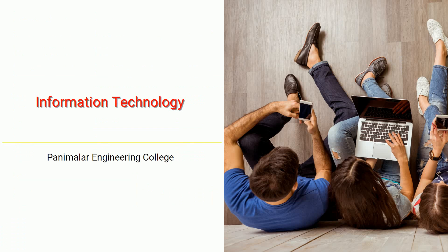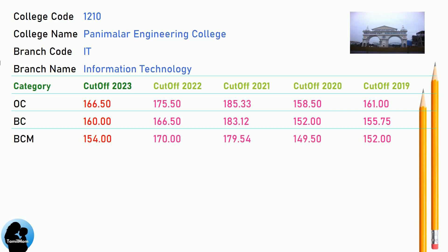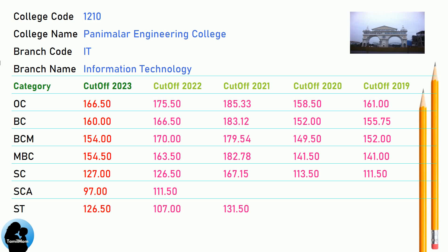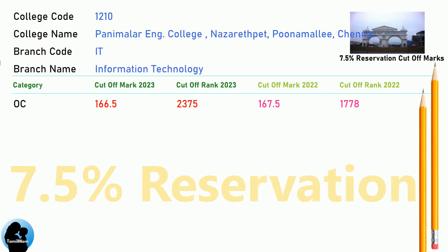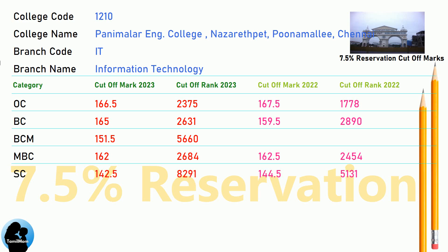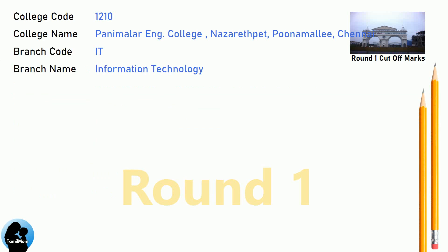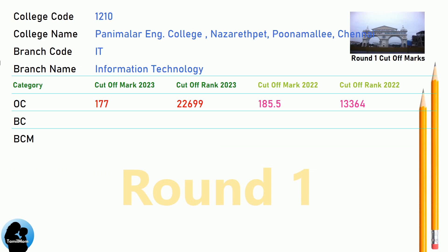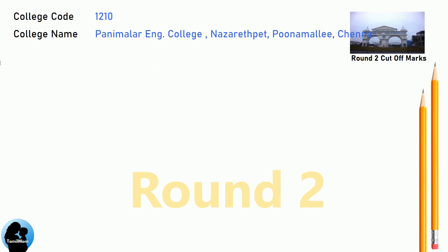DNEA Cut-off for Panimalar Engineering College in Information Technology. DNEA 7.5 Reservation Cut-off for Panimalar Engineering College in Information Technology. DNEA Round 1 Cut-off for Panimalar Engineering College in Information Technology. DNEA Round 2 Cut-off for Panimalar Engineering College in Information Technology.